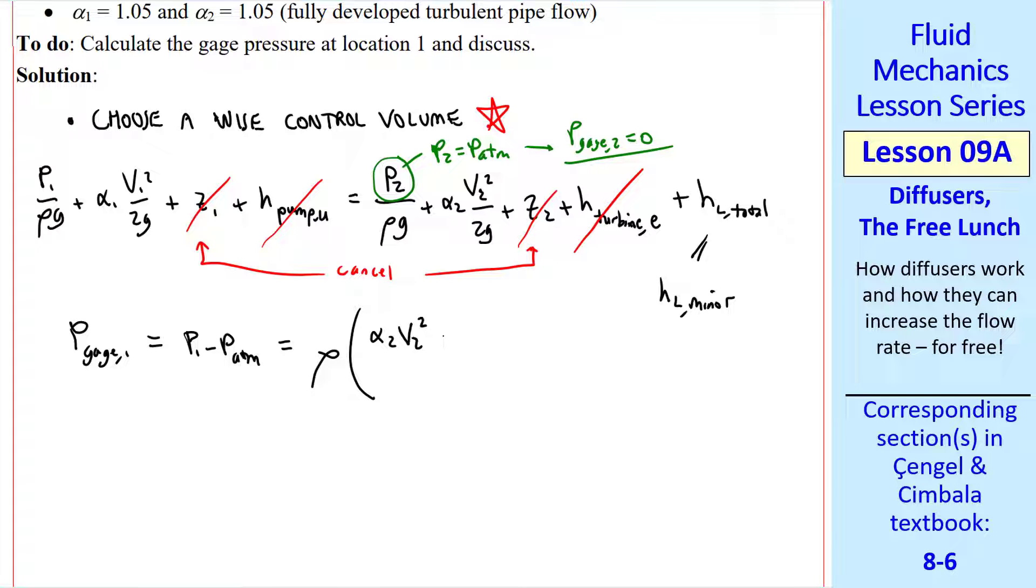So this equation reduces to P gauge one equal P one minus P atmosphere. And I collect the terms to get rho alpha two V two squared minus alpha one V one squared over two plus our minor loss, which is KL of the diffuser, rho V squared over two.